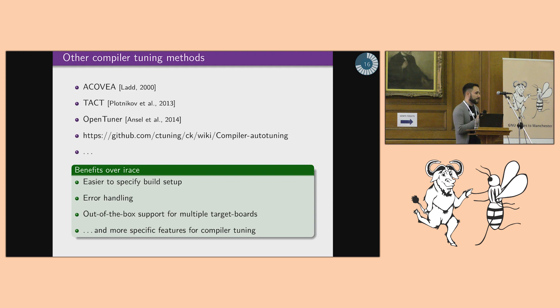And they actually have some benefits over IRIS. So for example, they are easier to specify your build setup. They have very advanced error handling for the many things that can happen that can go wrong when you're compiling some code, and they have out-of-the-box support for multiple target boards and a lot of more features that are specific for tuning compilers.